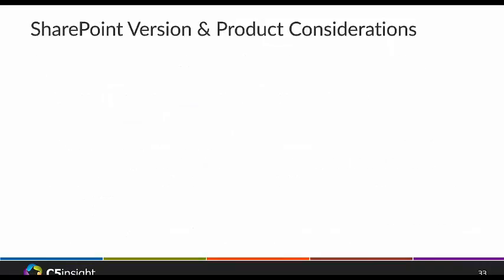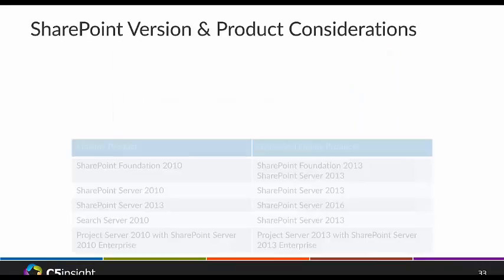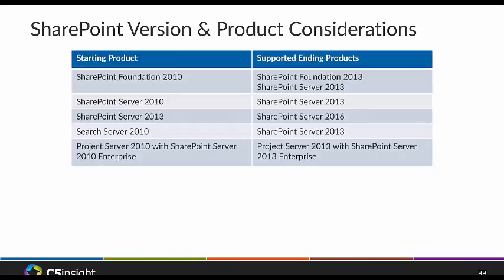A quick note on version upgrade paths: Standard can go to Standard, Enterprise goes to Enterprise. Foundation can go to Foundation 2013 or Server 2013. Server 2010 goes to Server 2013. Server 2013 will go to 2016. If you have Search Server, that has to go to SharePoint Server 2013. And Project Server 2010 goes to Project Server 2013.